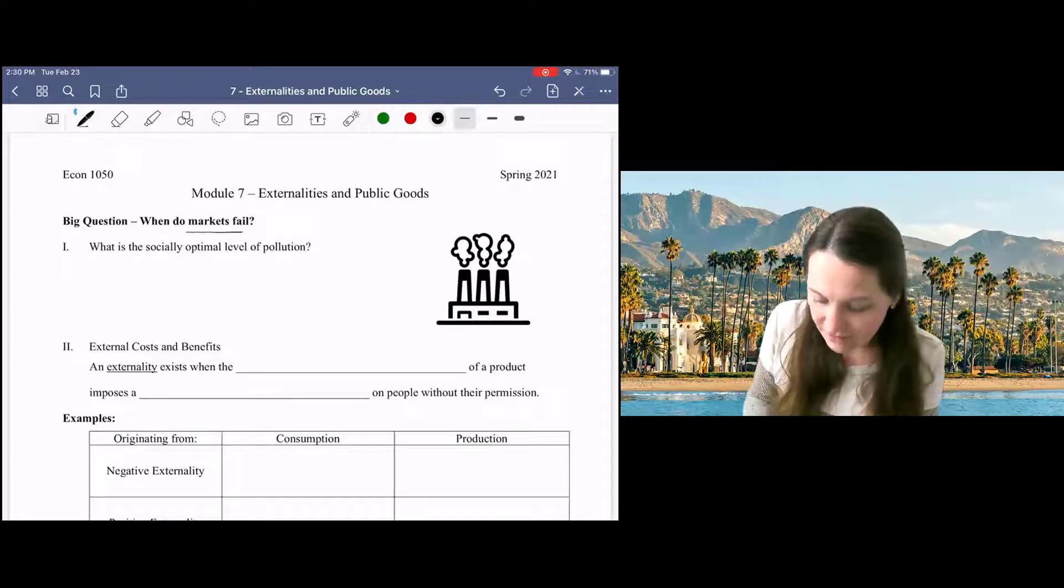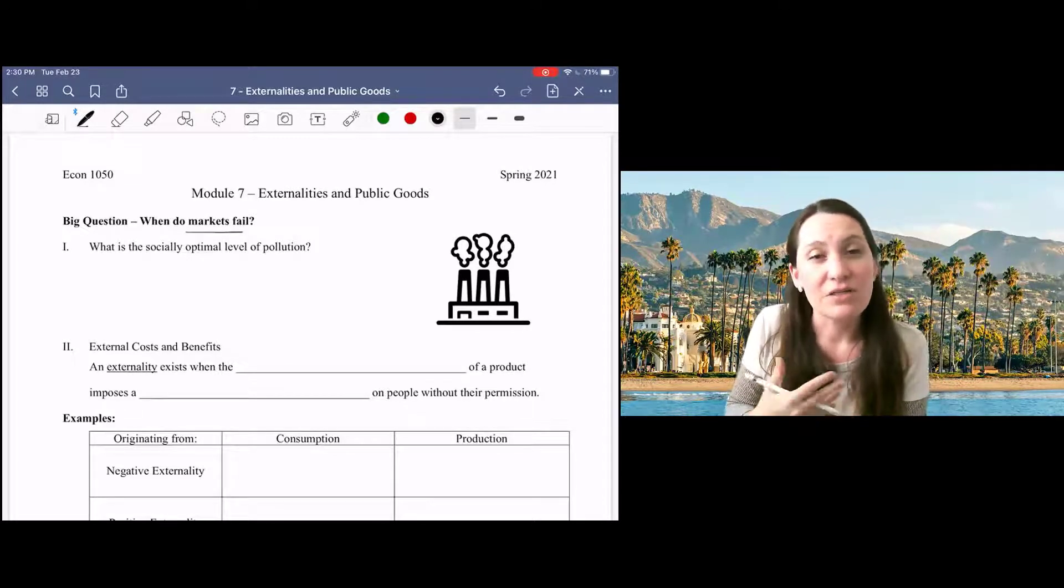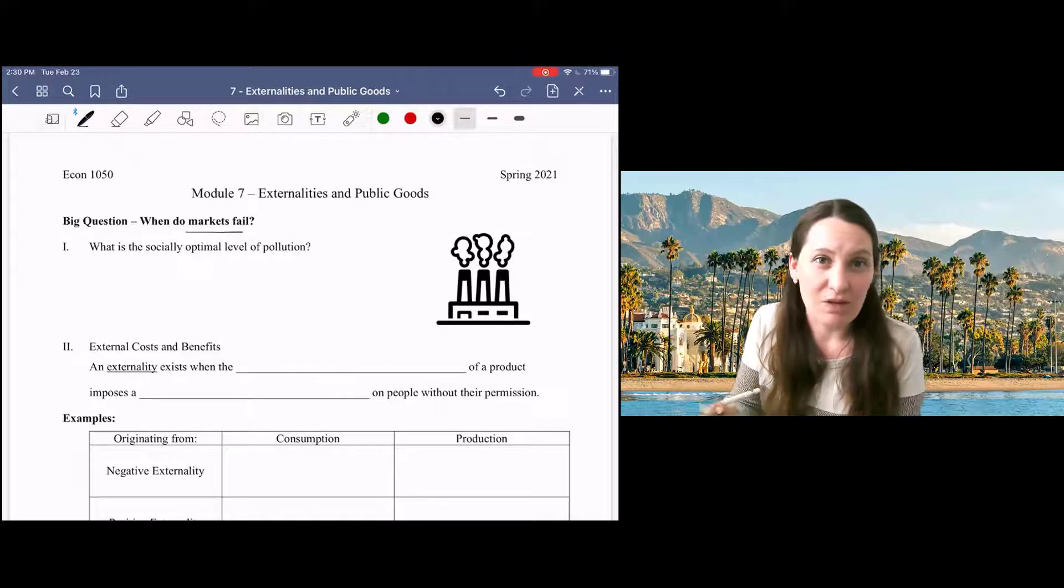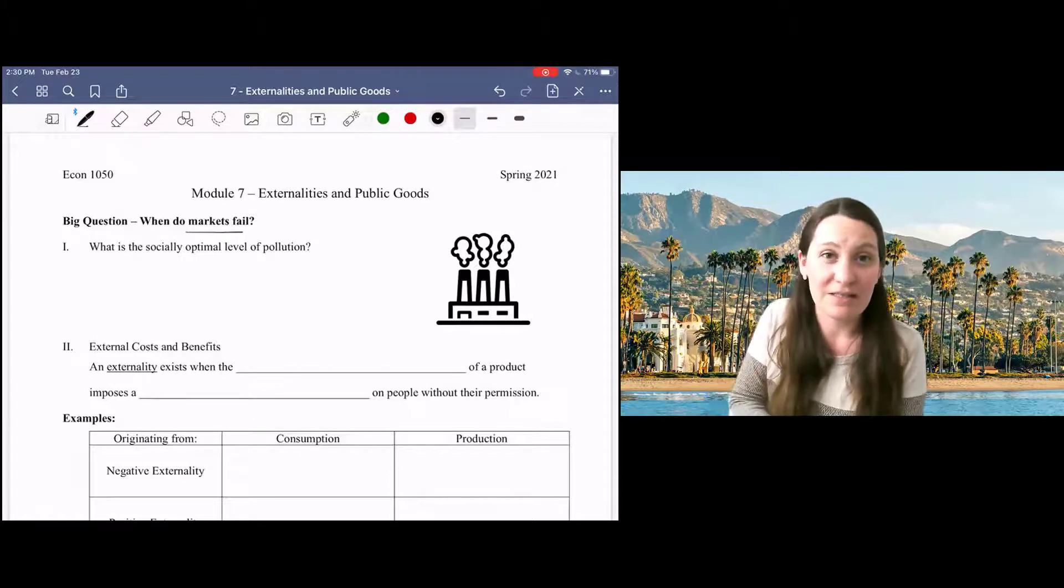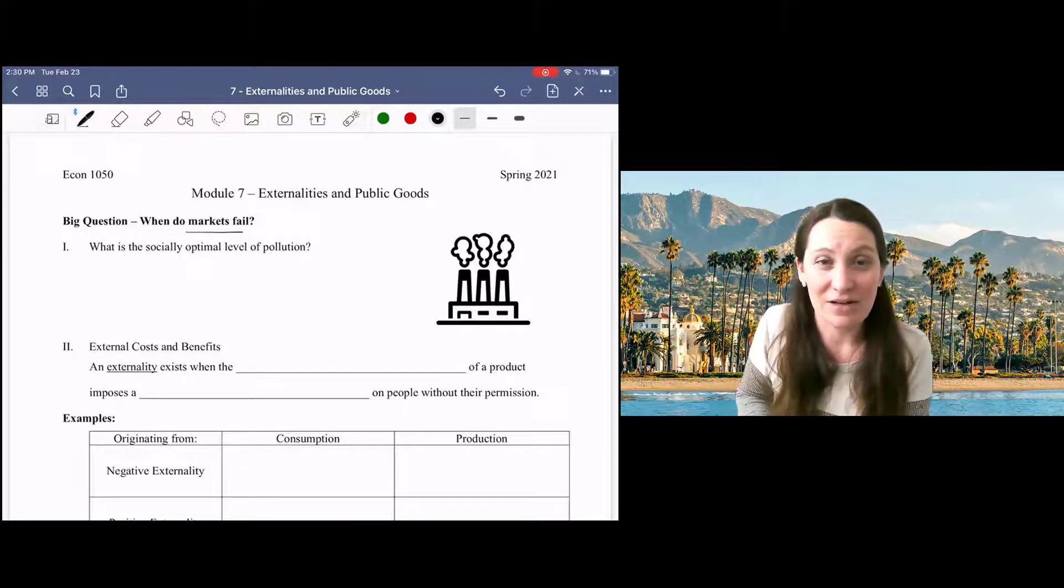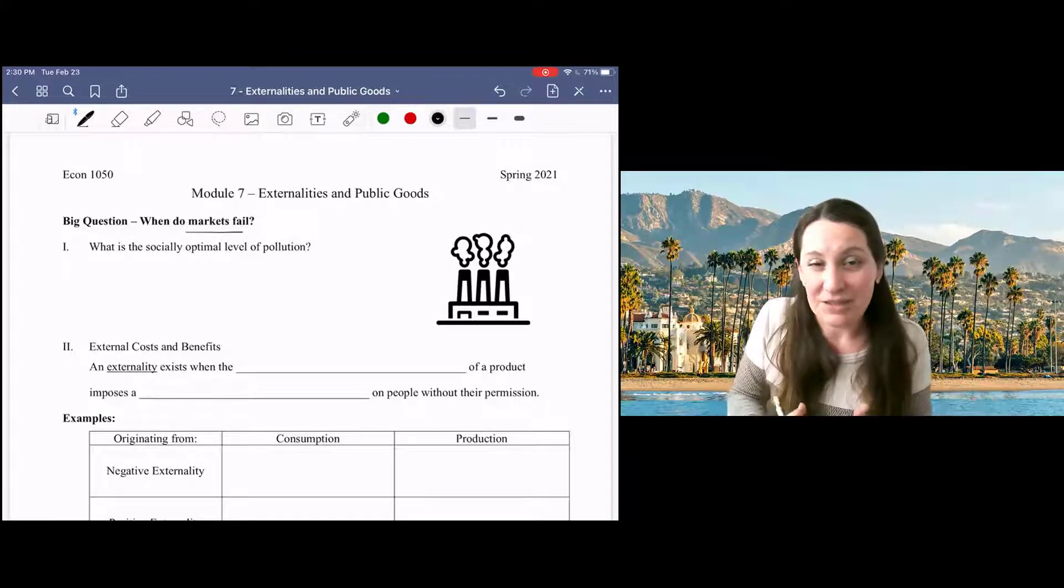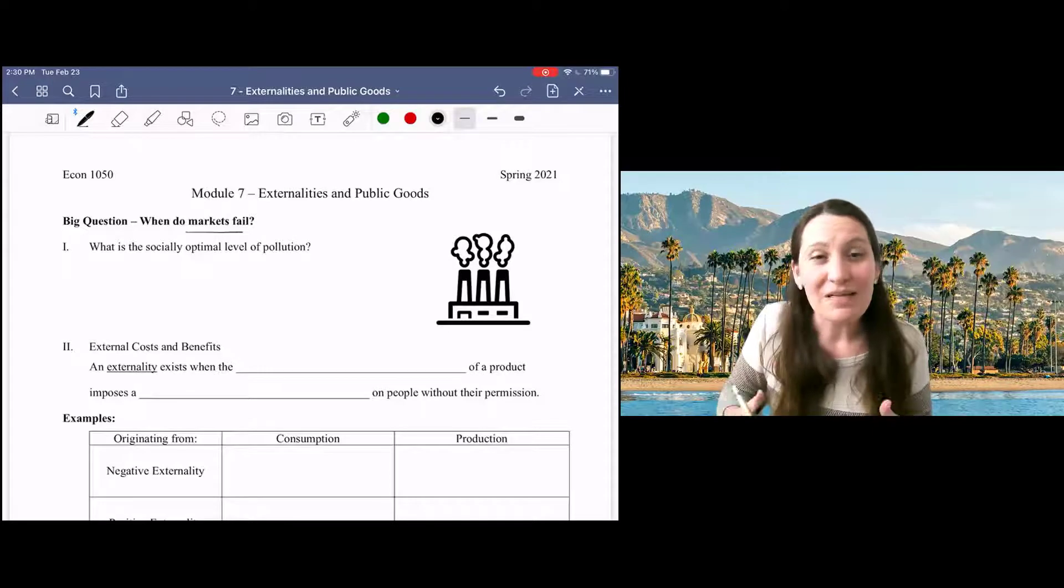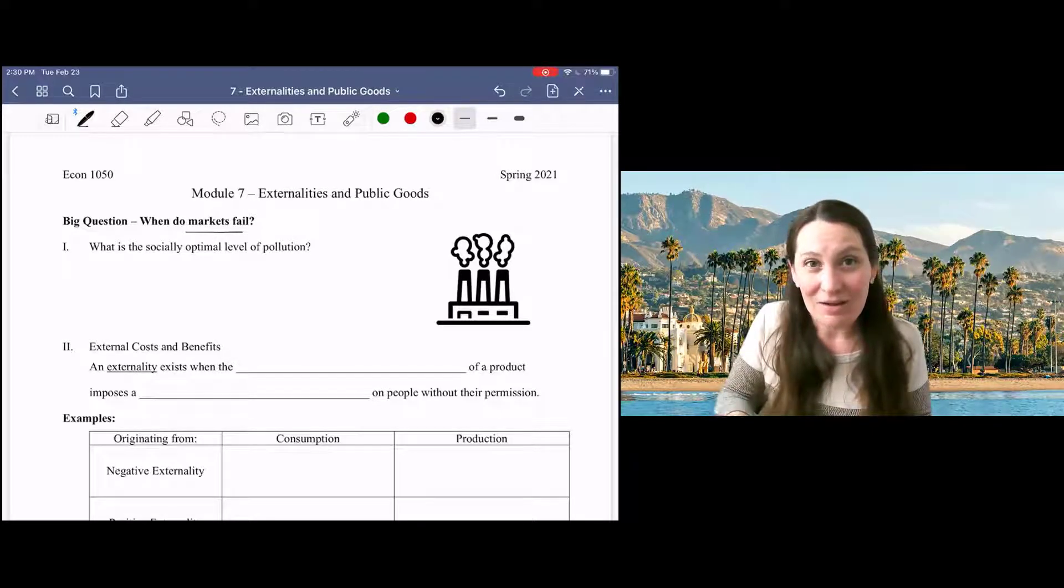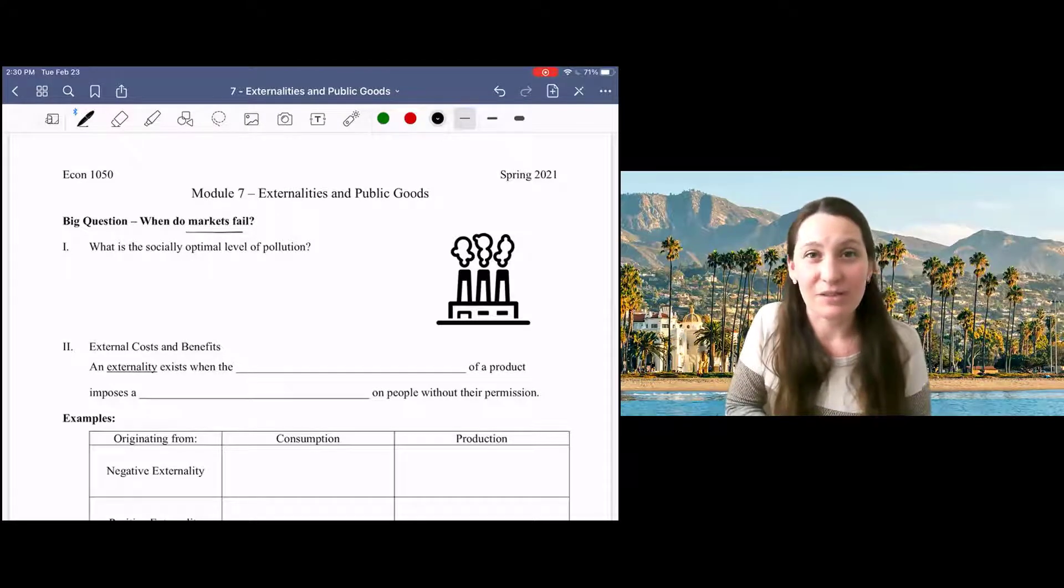This market failure, as we call it, can result from several different problems. The first that I want to discuss is externalities. One classic example of an externality is pollution. So let's begin by thinking critically about the socially optimal level of pollution.